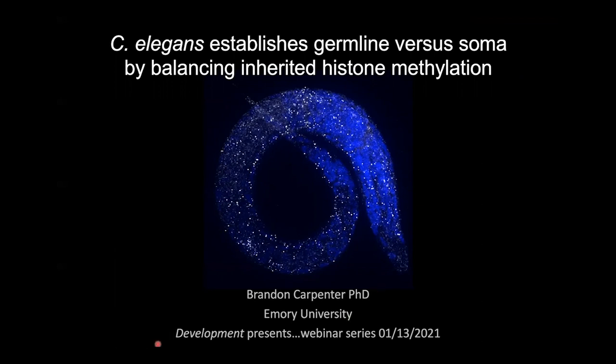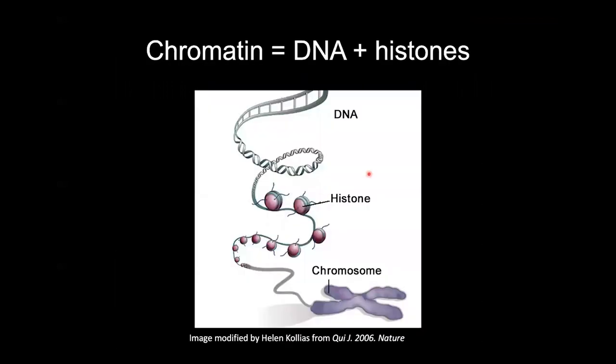We'll start with a warm-up on chromatin. Chromatin consists of DNA wrapped around histone core proteins. Modifications to the tails of these proteins can regulate accessibility to the DNA. Some marks we call active marks open up chromatin and make it accessible — these are generally associated with active transcription. There are also repressive modifications that can be added to these tails, which condense chromatin and are associated with repressed transcription.